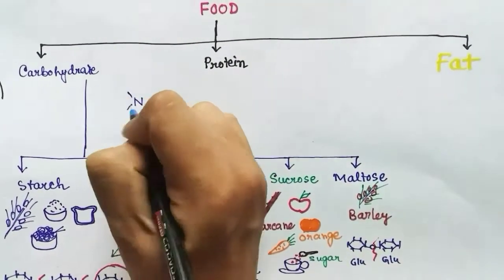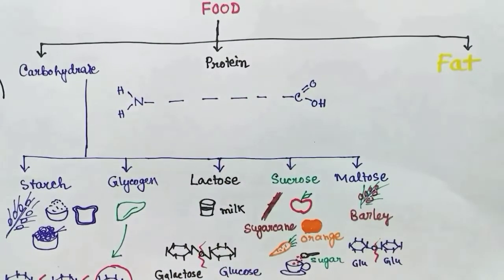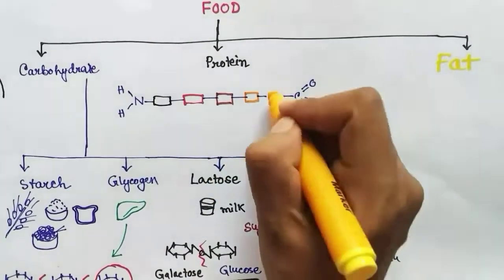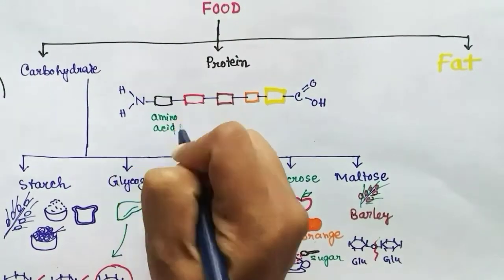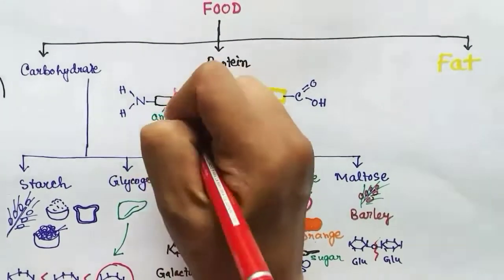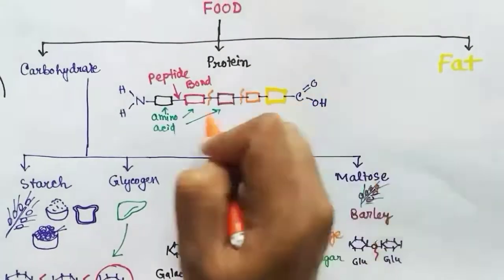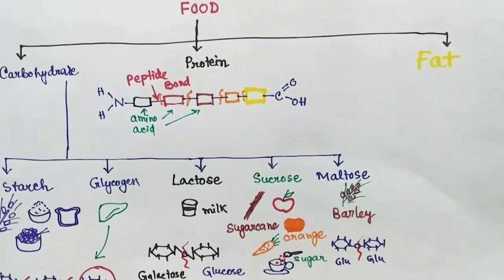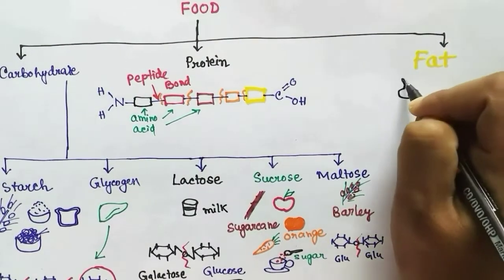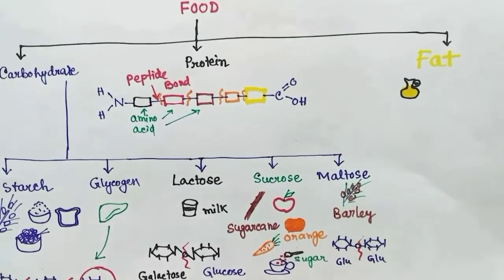Now coming to the second category of food: protein. Protein is made up of different types of amino acids, so amino acids are the building blocks of protein. Amino acids bind to each other by a specific bond called a peptide bond to make protein. In the course of digestion, we have to break the peptide bonds of protein to get the amino acids that can be absorbed by the body.